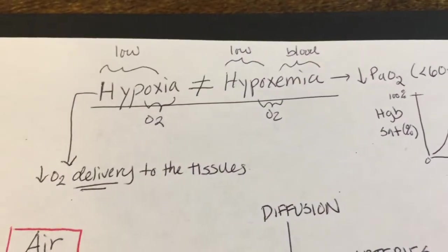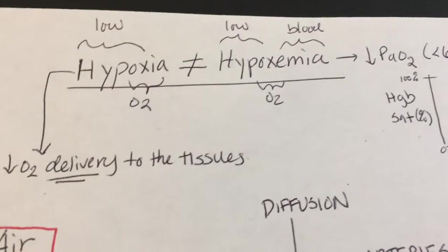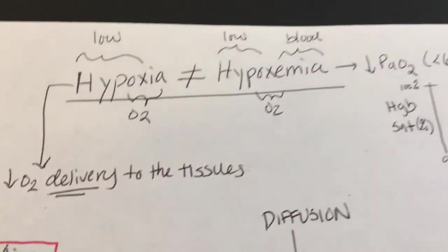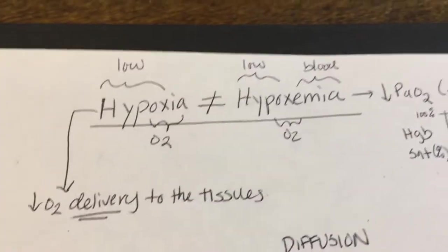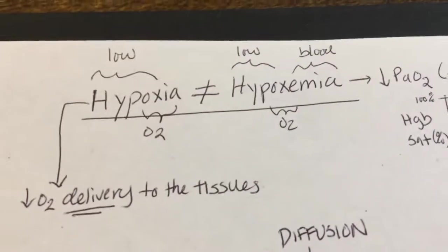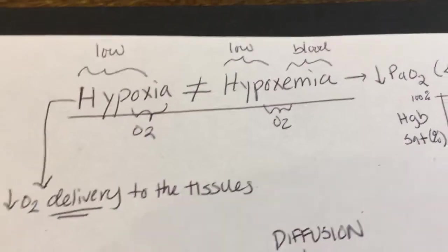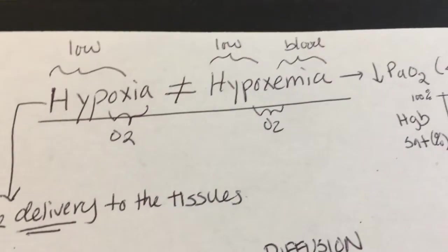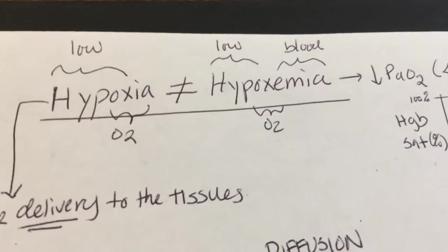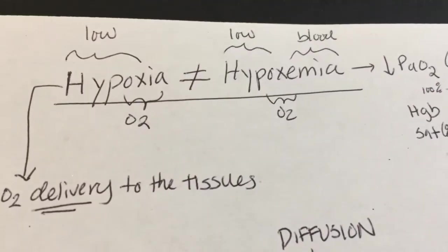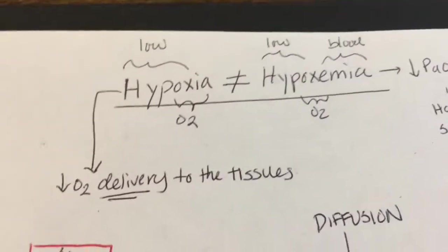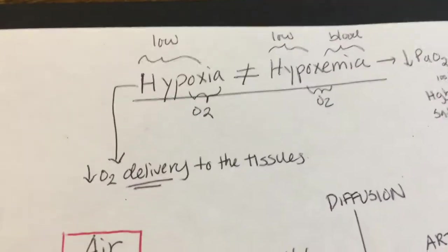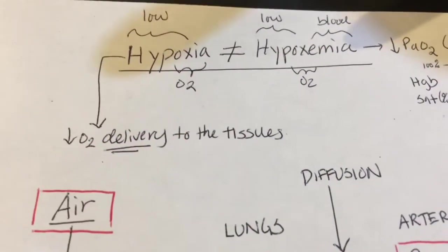One of the topics that many medical students struggle with is hypoxia versus hypoxemia. I think I found a very good way to address this issue and break these two things down in a way that's easy to understand. It's important to make the differentiation between what hypoxia is and what hypoxemia is. The easiest way to remember things is if you can look at the name and figure out what it means.